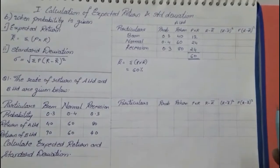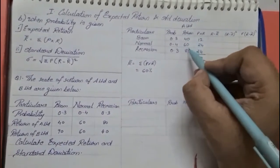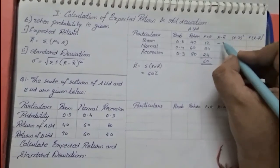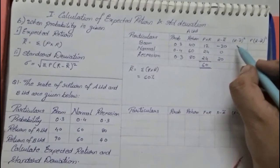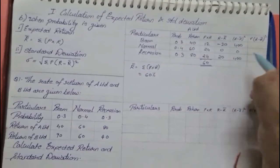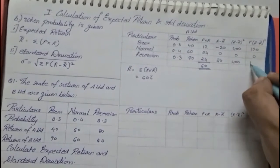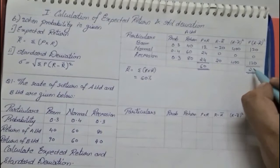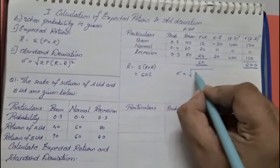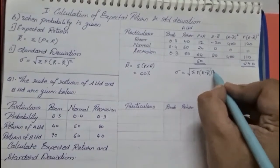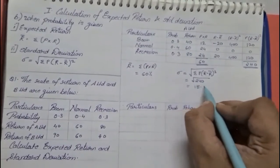Now to find standard deviation for A Limited. R minus R-bar gives negative 20, 0, and positive 20. Squaring these: 400, 0, and 400. Multiplying by probability: 120, 0, and 120, giving a total of 240. The standard deviation formula is the square root of the summation of P into (R minus R-bar) squared — the root of 240 — which comes to 15.49%.